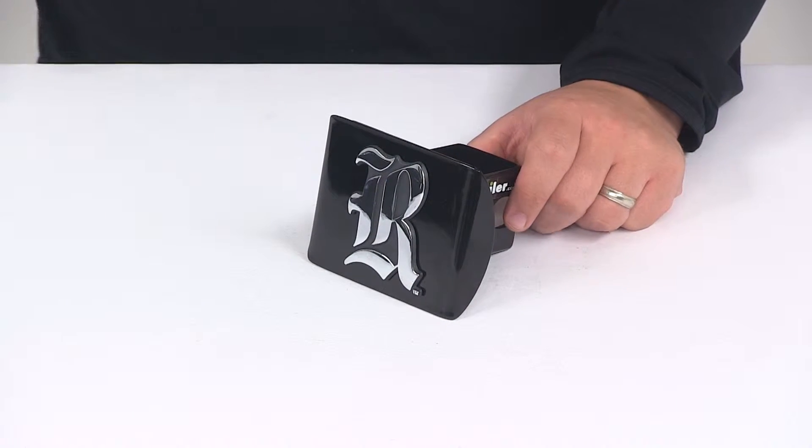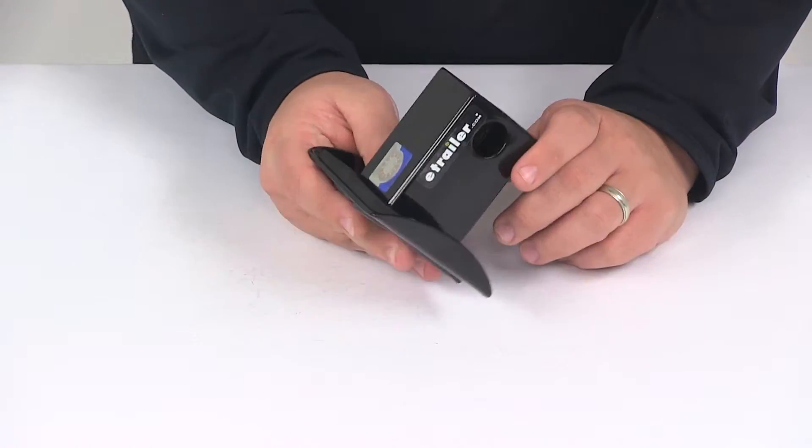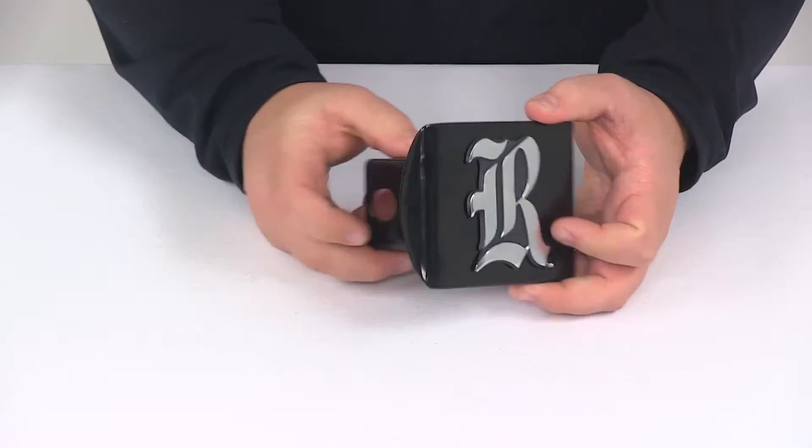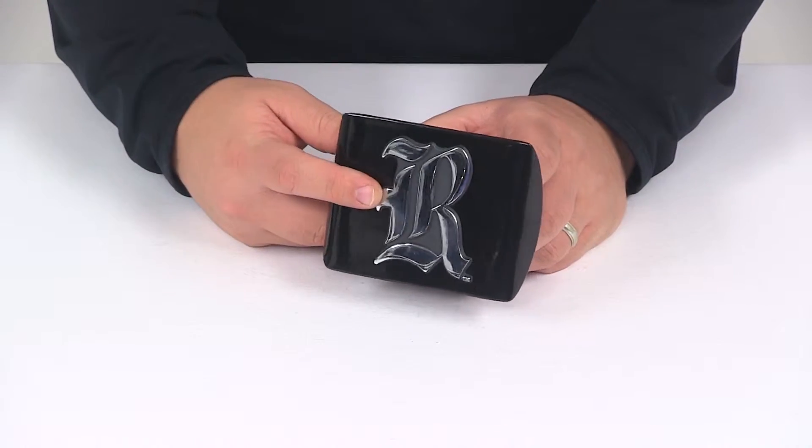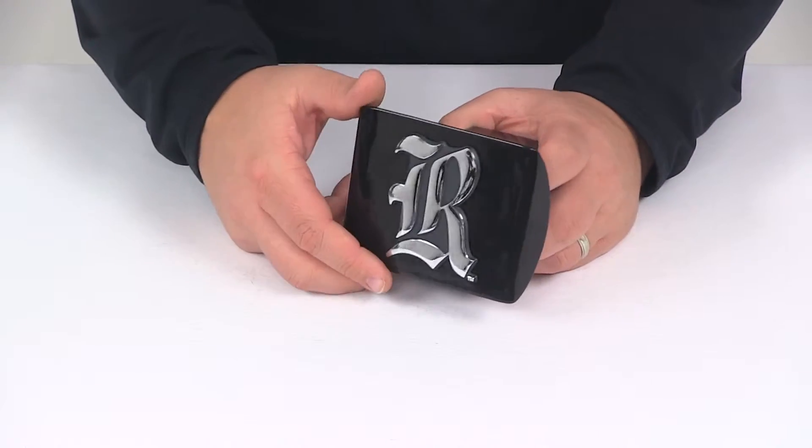The hitch cover is made from steel construction. It features a nice black powder coat finish which does a great job at resisting rust and corrosion. Here on the front we have the chrome plated metal emblem. It has a nice rust proof and fade proof design.